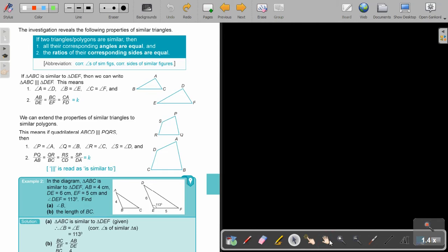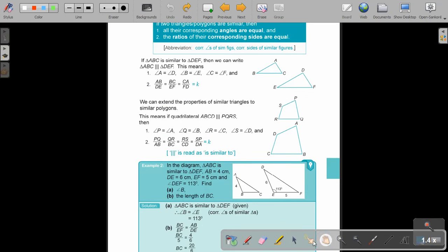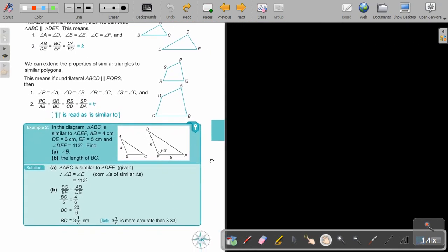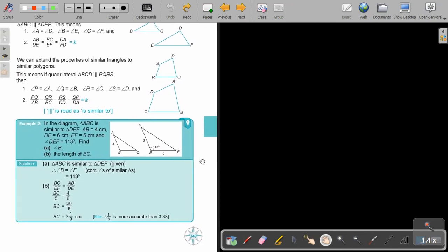Let's look at an example. In the diagram, triangle ABC is similar to triangle DEF. AB is 4, DE is 6, and EF is 5. That is 113, and find angle B. So if you look at angle B, it's also going to be 113 because you can see that angle B is equal to angle E, and that's why it's 113.